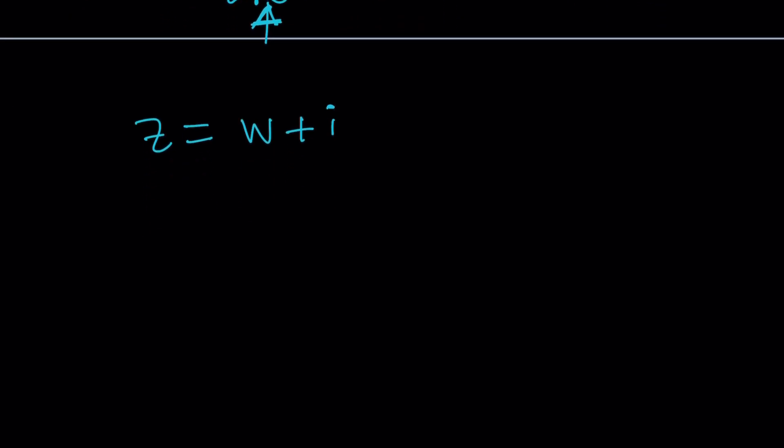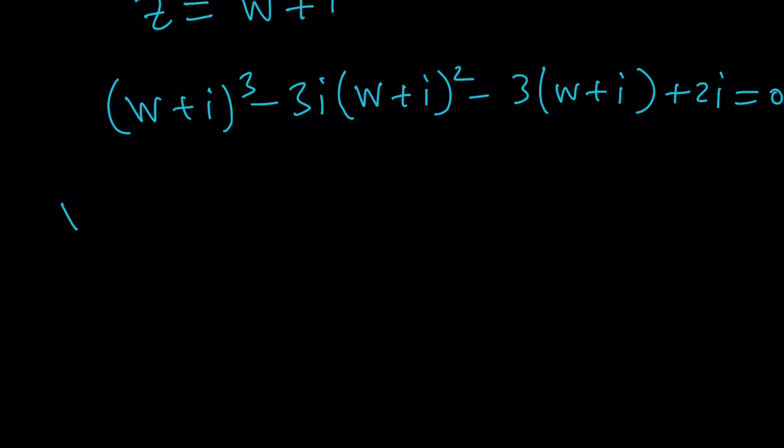Let's go ahead and do it. Replace z with w plus i. I'm going to have to cube it, square it, multiply it, and so on. And of course this is still equal to 0. Let's use the formula: w cubed plus 3w squared i plus 3wi squared plus i cubed minus 3i times w squared plus i squared plus 2wi, and then minus 3w minus 3i plus 2i. Let's simplify everything.